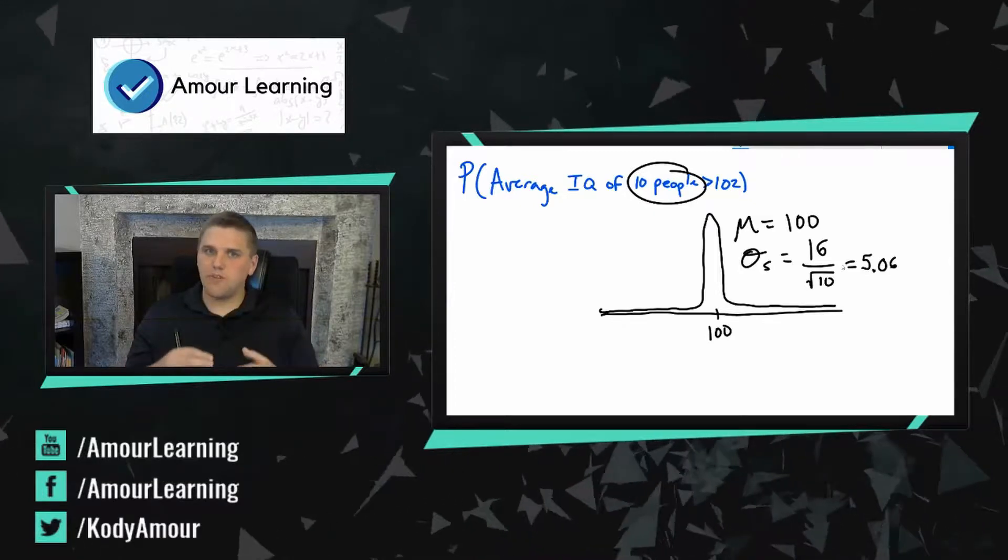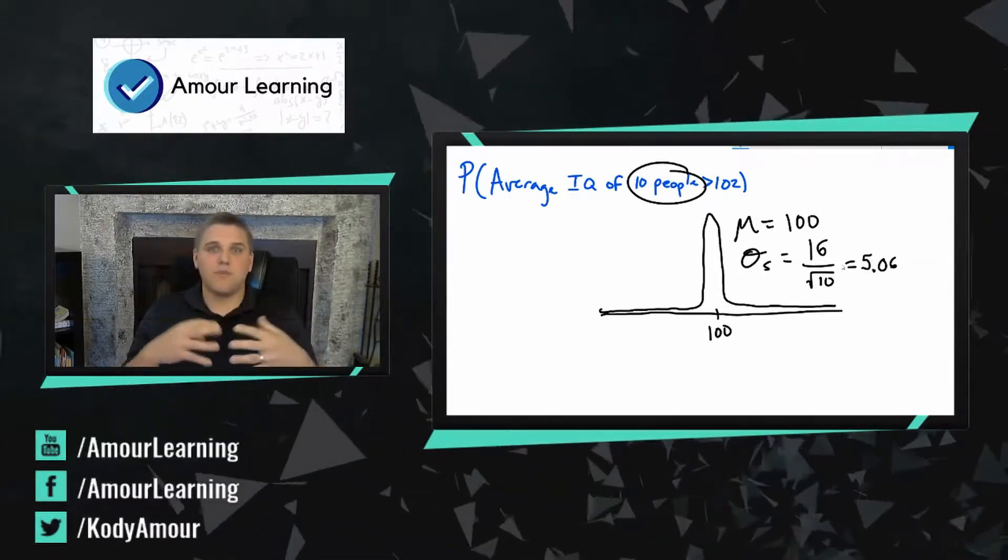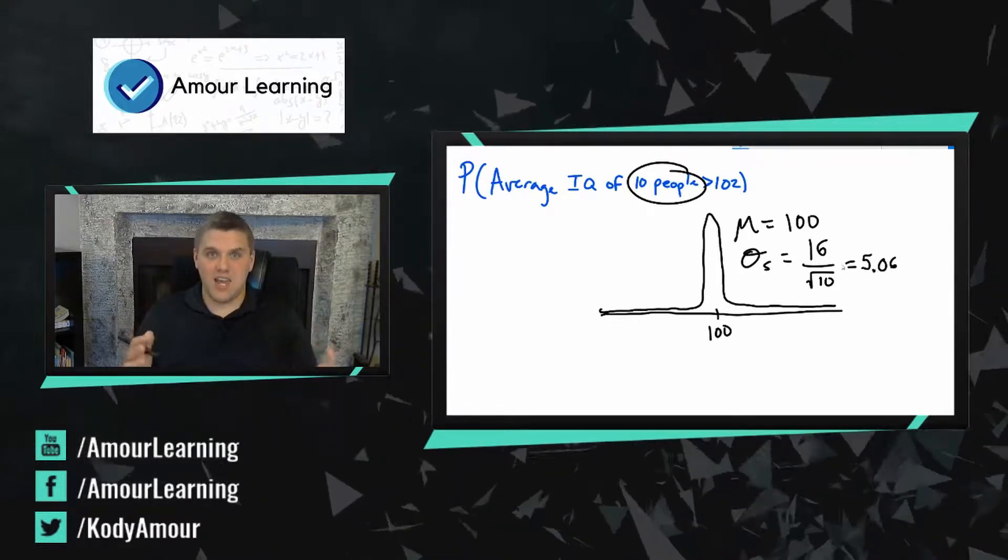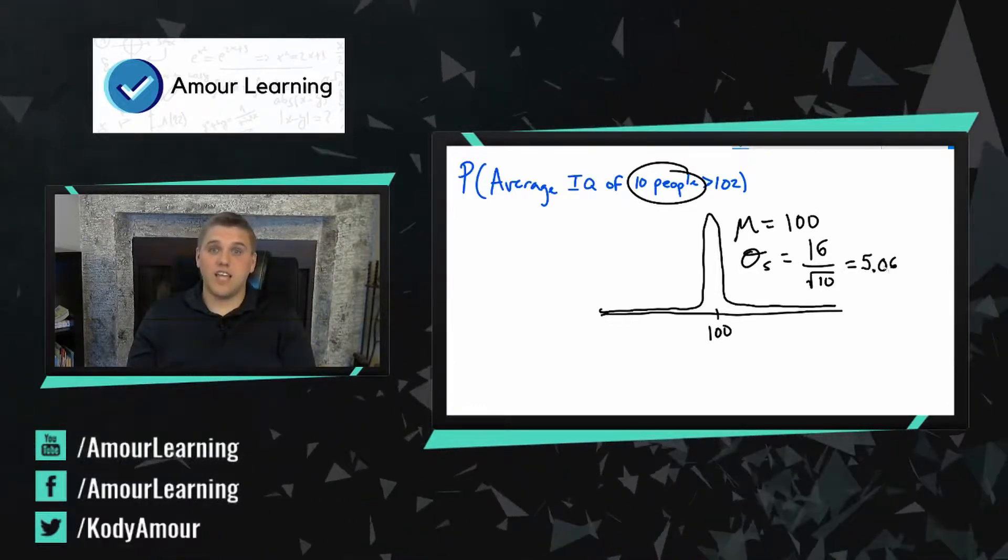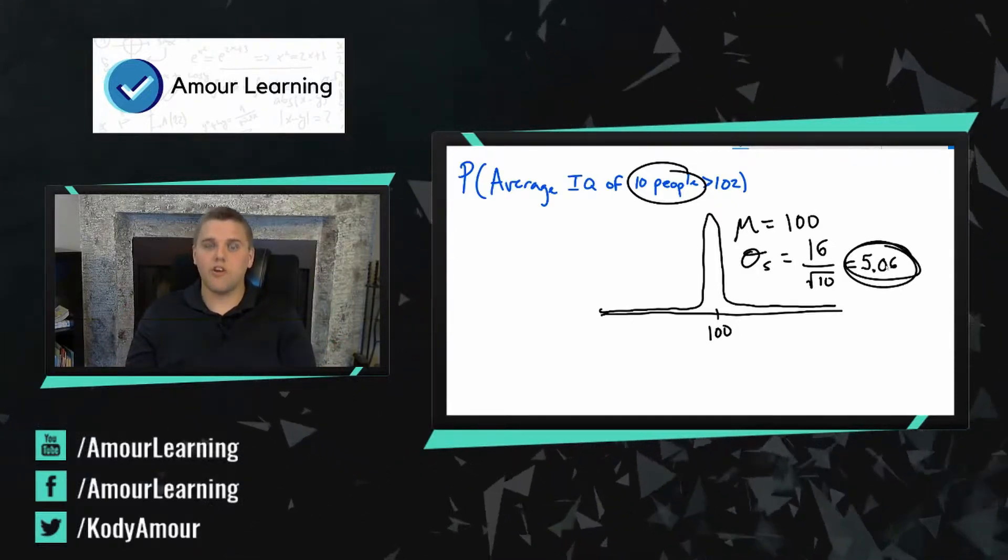This bell curve is a little bit different because we're looking at sample averages where the samples are size 10. So the standard deviation in this case is 5.06, much smaller, like a third smaller.